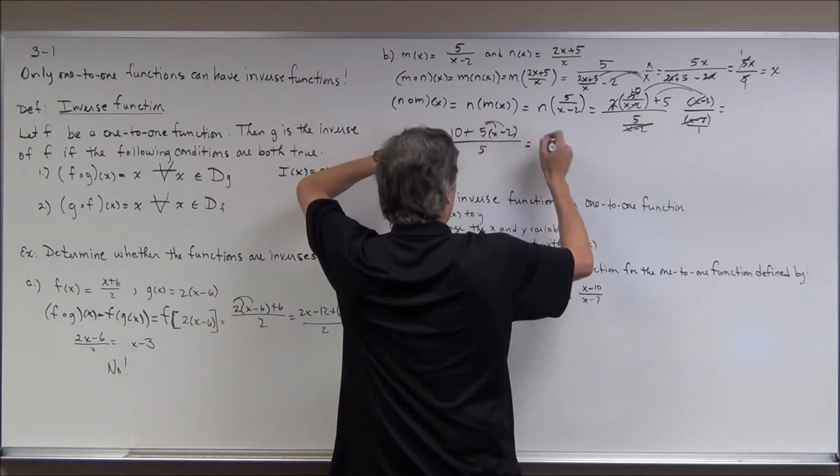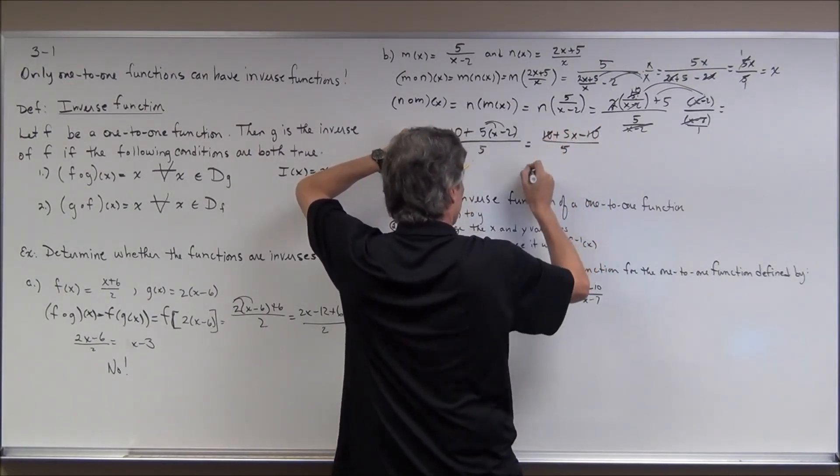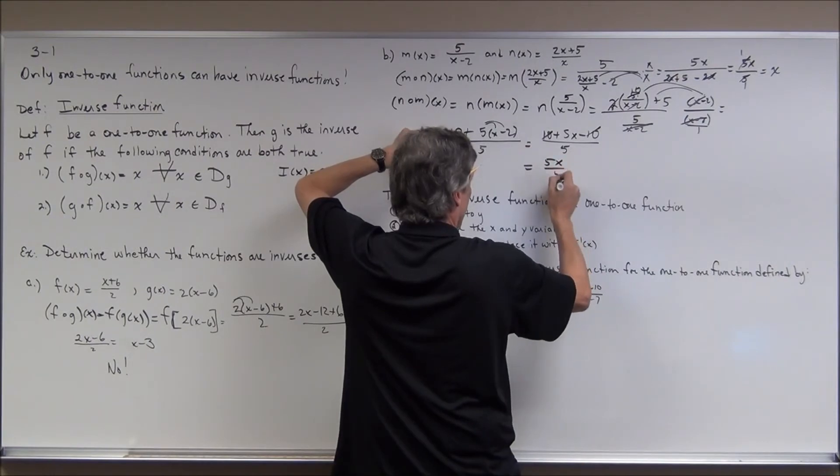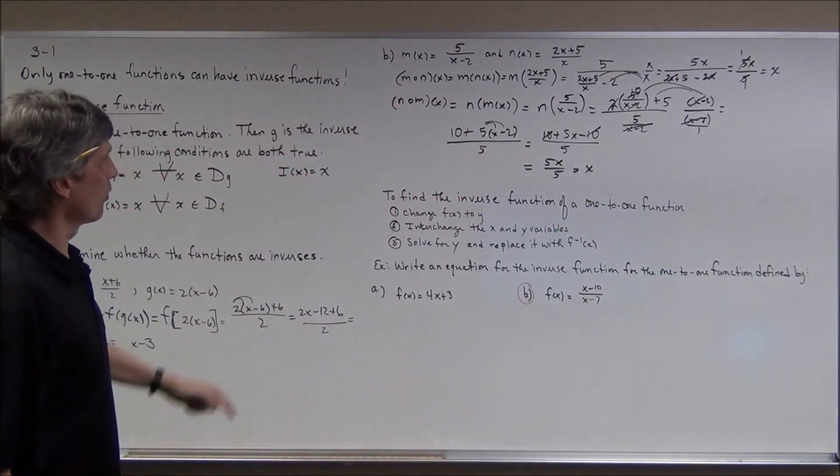So I distribute. I have 10 plus 5x minus 10, all over 5. The 10s cancel. I have 5x over 5, which is x. I get the identity in both orders.